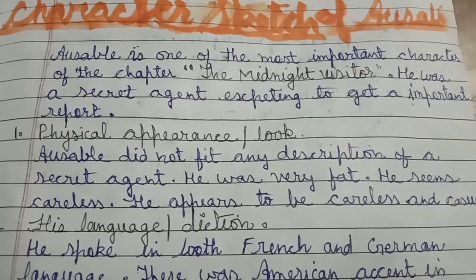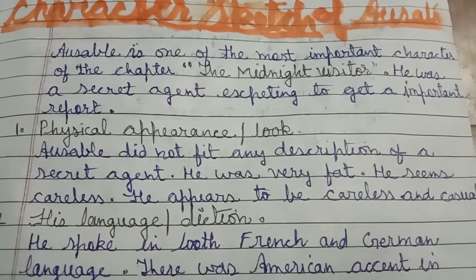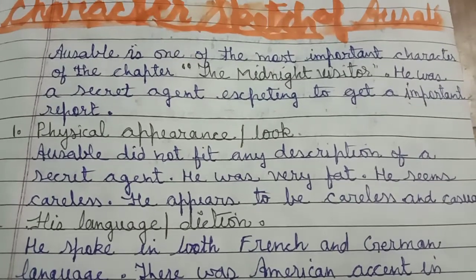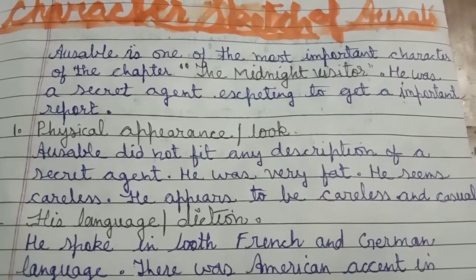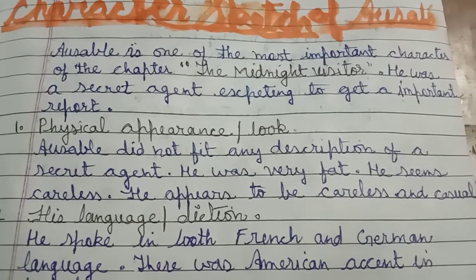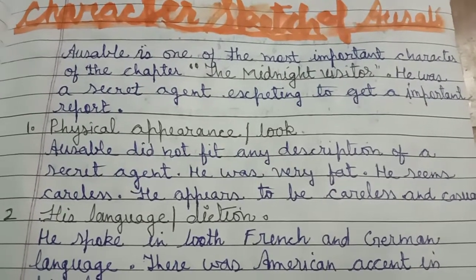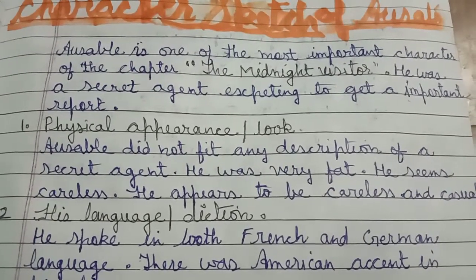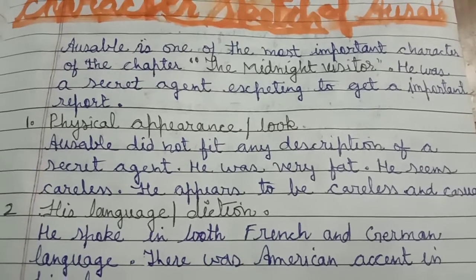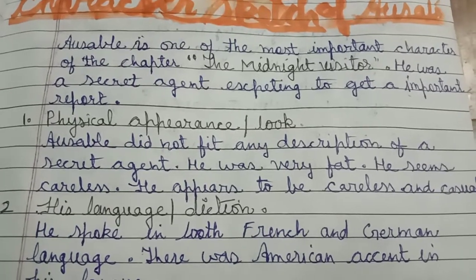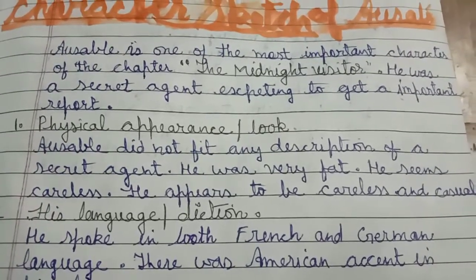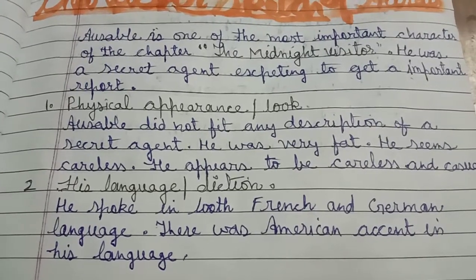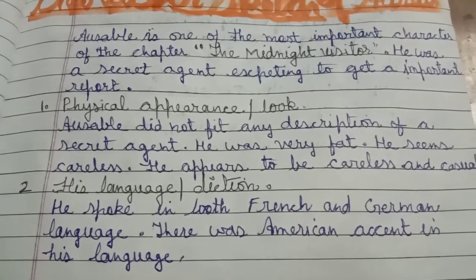Ausable was not seen as a typical secret agent. He wore a long coat, a hat, goggles, and gloves, but he did not behave accordingly. He was very big and looked unassuming.